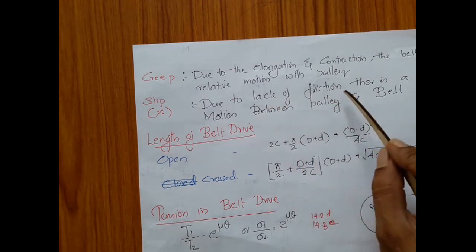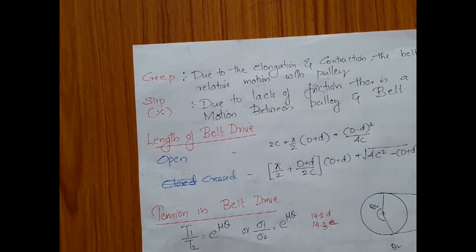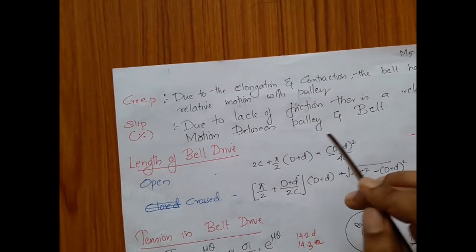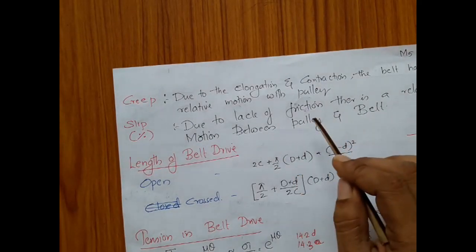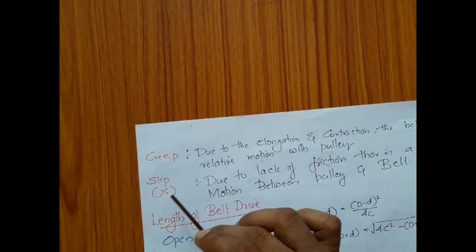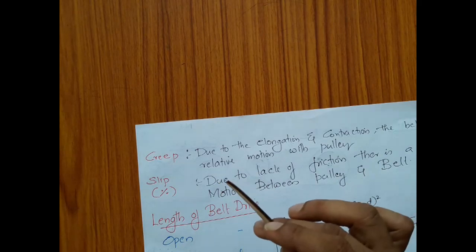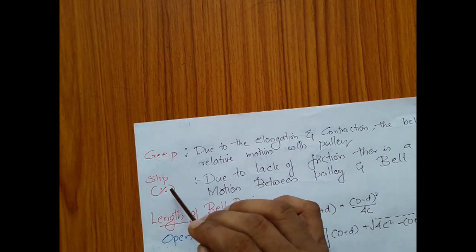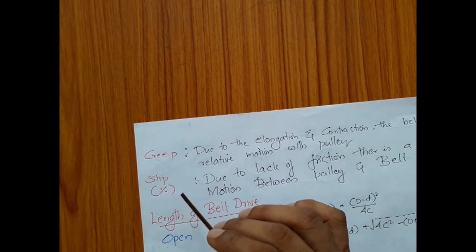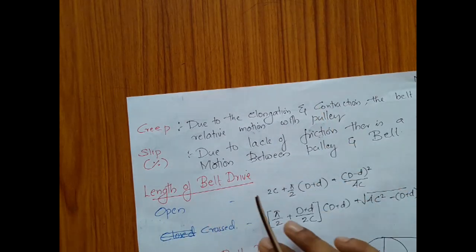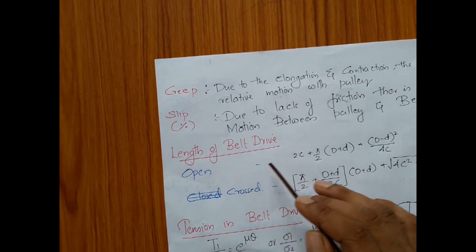Slip is the relative motion due to lack of friction. Since belt drives are friction drives, friction is very important for power transmission. If there is a lack of friction, there can be relative motion between the pulley and belt — that is termed slip. Slip is expressed in percentages, such as 0.5%, 1%, or 2%. Slip is an important parameter but is not used as much in design.